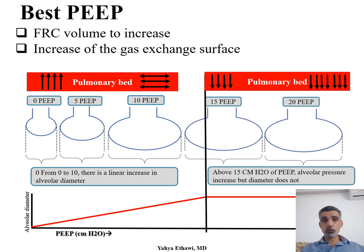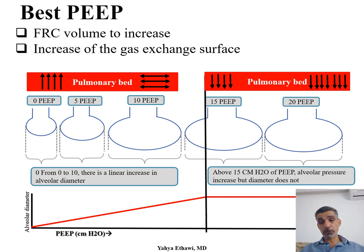The best PEEP will give you very good functional residual capacity and will increase gas exchange. In this graph there is pressure and volume. Starting from zero and increasing the PEEP, you get some volume — until you reach a point where you're increasing the pressure but not getting any more volume. When pressure is zero and alveoli collapse, the pulmonary bed is actually bigger than the alveolar bed.